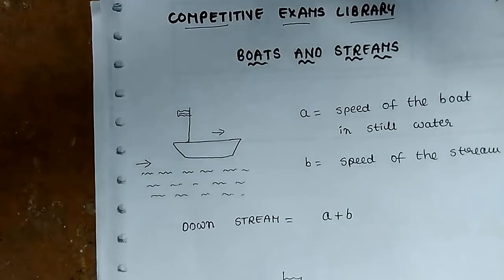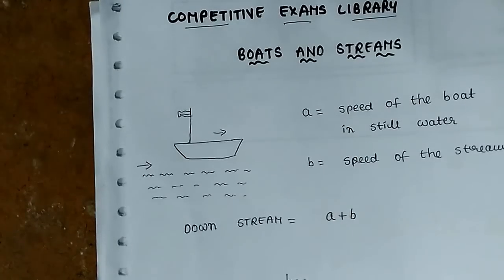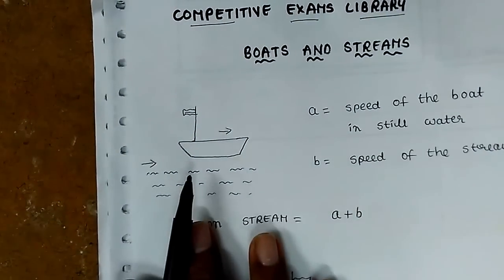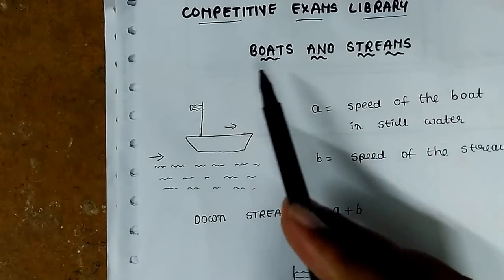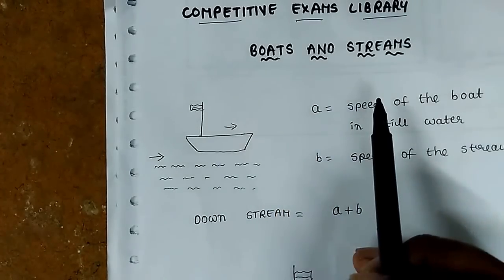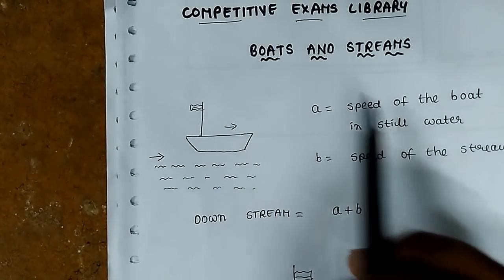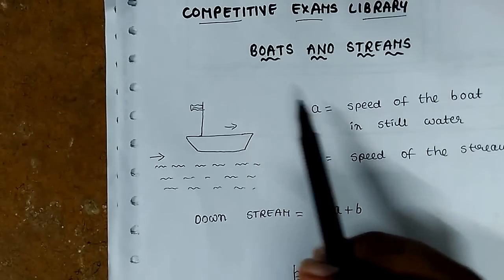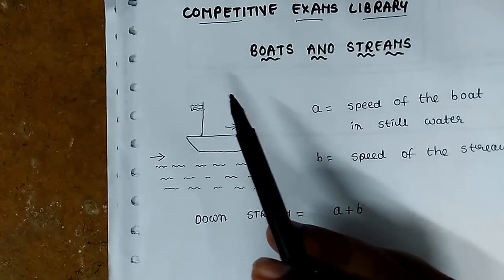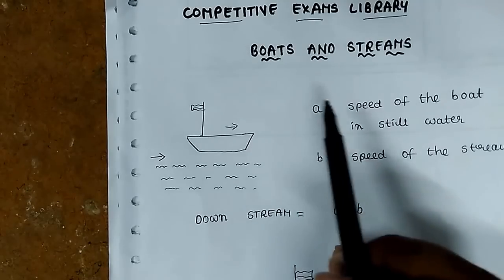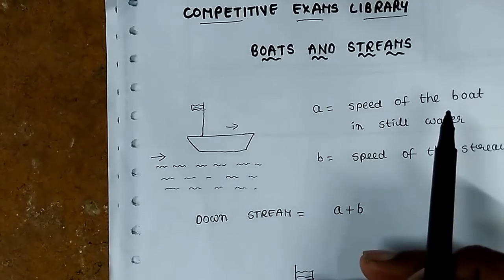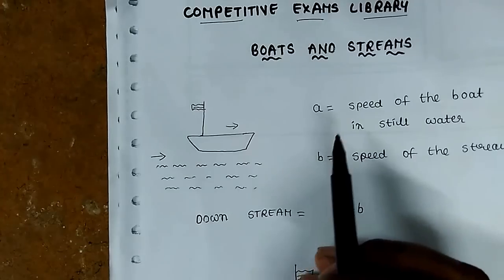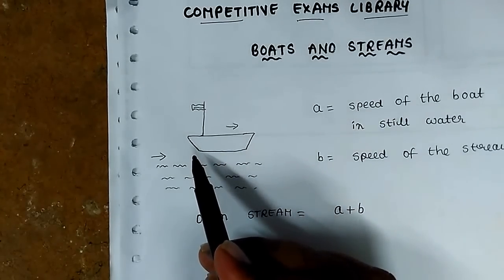First of all, we will try the concept of Boats and Streams. If we want to try the cycle and the next cycle, or if we want to choose the cycle, the download is easy. We will be able to spend 2x energy time going down, and our time is 1x energy time going up. So we will try the concept of Boats and Streams.